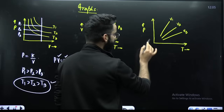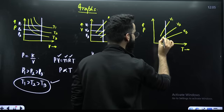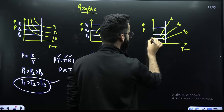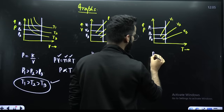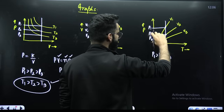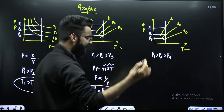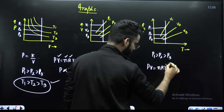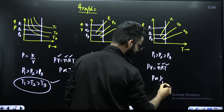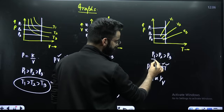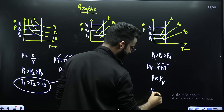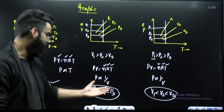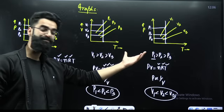For another graph type, again draw a straight line, mark these points, and get the corresponding y-axis values: p1 > p2 > p3. Using PV = nRT with temperature constant, pressure is inversely proportional to volume — more the pressure, lesser the volume. So p1 being more means v1 < v2 < v3. This is how you can compare these graphs and solve different types of questions with this simple procedure.